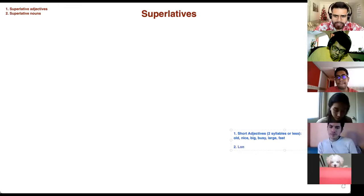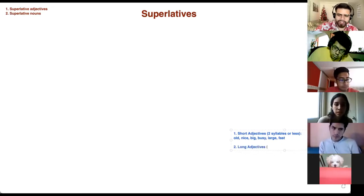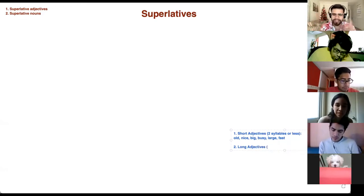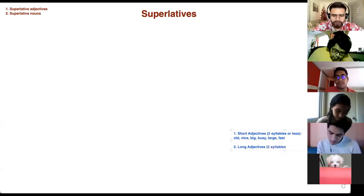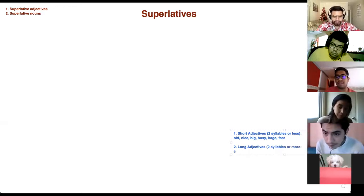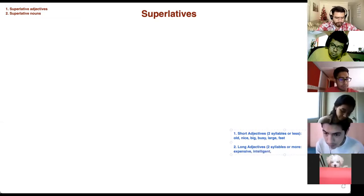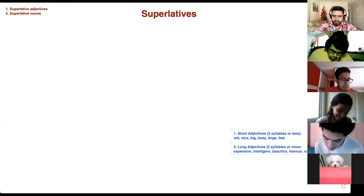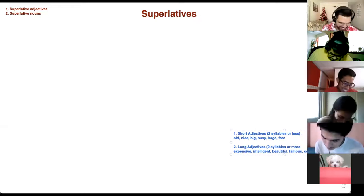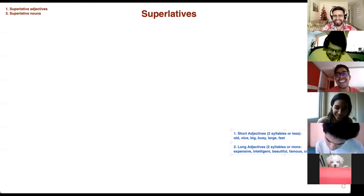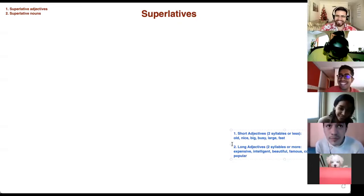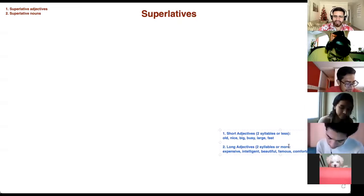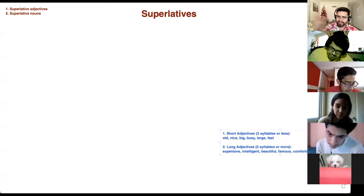And then we have long adjectives. This is kind of a review because we saw this in the past with comparatives. Now, this is with superlatives. Long adjectives have two syllables or more. Some examples: expensive, intelligent, beautiful, famous, comfortable. Those are some common long adjectives. Write them down and let me know when you're ready.